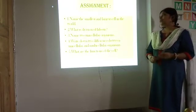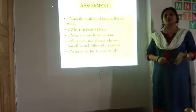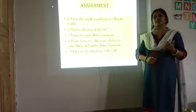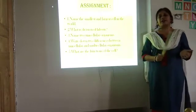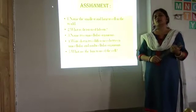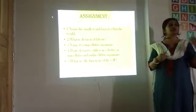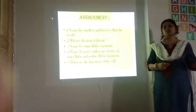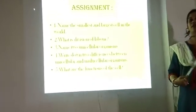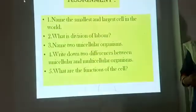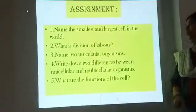Examples of unicellular organisms are amoeba and paramecium. Multicellular organisms include all advanced types of plants, animals, and the human body.